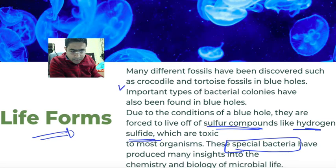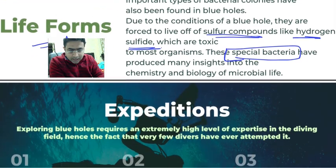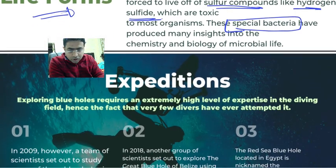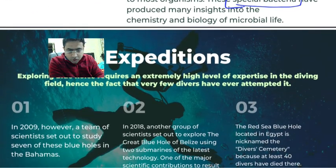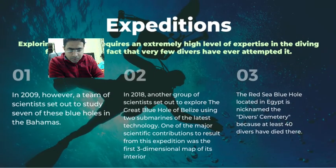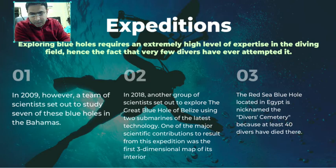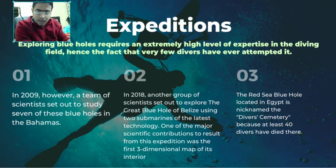Other life forms found inside blue holes include crocodiles and tortoises, but their life is completely different from normal conditions. And as I mentioned, an 8000-year-old caravan has been found here, which is something very significant about the Young Blue Hole.